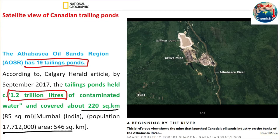These tailing ponds cover near about 220 square kilometers — comparable to half the area of Mumbai, where about 1.7 crore people live. A huge amount of land is covered with trillions of liters of toxic water, and one day this water will need to be released into the environment, which will be a huge disaster. Additionally, tailing pond water seeps underground, contaminating groundwater. Maintaining such ponds is cost-intensive, especially for a loss-making industry.